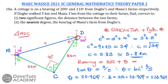Bearings are always given in three digits — for example, 70° is written as 070°. Rounding 230.964° to the nearest degree, since the decimal part is 0.964, we round up, giving a bearing of 231°. So our two answers are: the distance between the two farms is 5.8 km, and the bearing of Manu's farm from Dubois farm is 231°. Since the triangle was right-angled, we used SOH-CAH-TOA and Pythagoras rather than the sine and cosine rules.